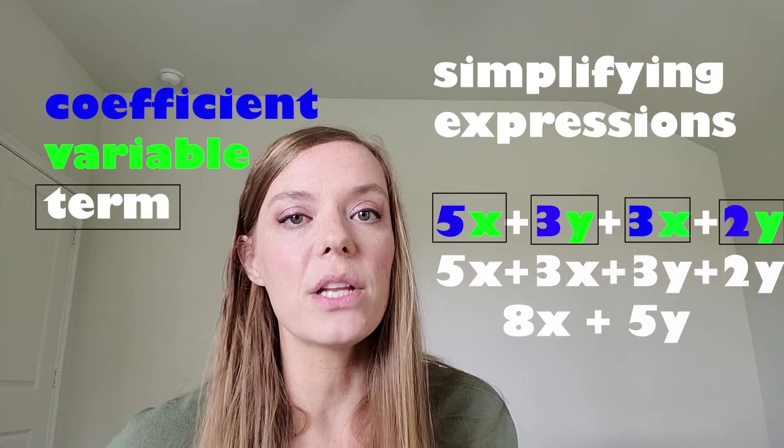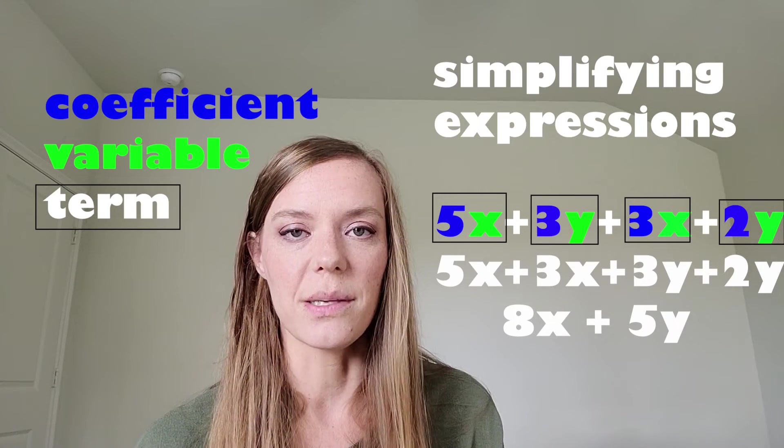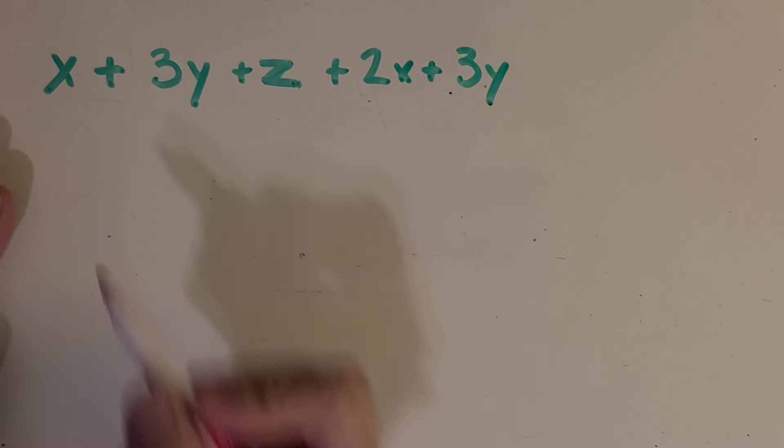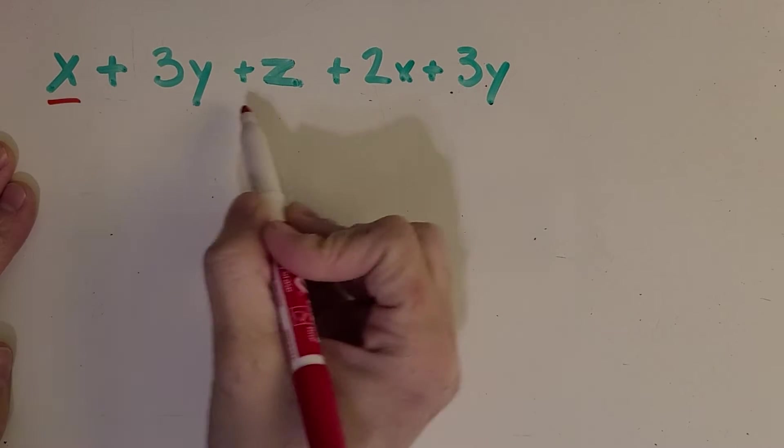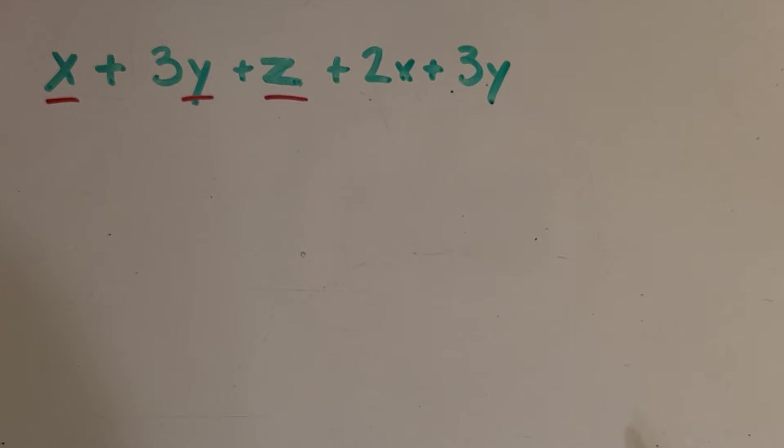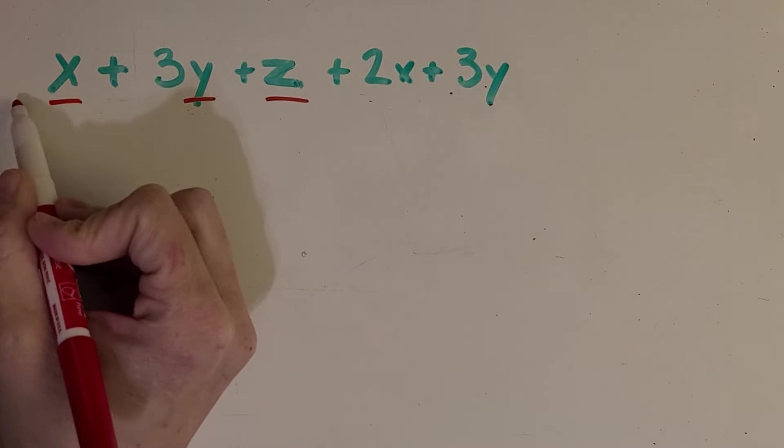All right, now I think we're ready to move over to the whiteboard. I'm going to give you some more expressions to simplify. All right, so here's another expression that we can simplify. So this one I made sure to make it a little bit more challenging with three different variables, and I threw something a little different at us because this x and the z, I don't know if you noticed, but it has no coefficient.